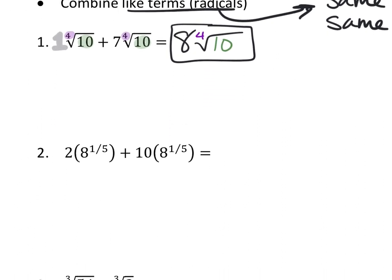In the second problem, it's not in radical form — it's in rational exponent form — but do you see how the base is the same and the exponent is the same? That's going to be the same as having the same index and radicand. Again, you just add together the like terms. Two plus ten — the coefficients — that's twelve. And then you just keep this stuff the same: eight to the one-fifth power. Don't change the radicand or the exponent at all.